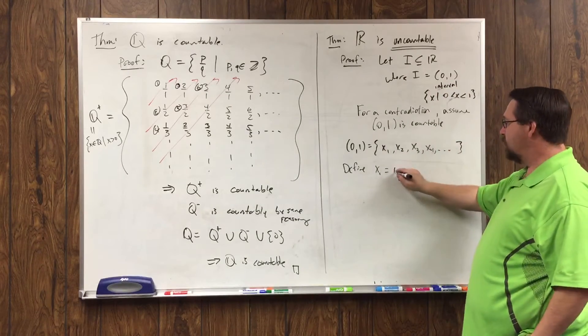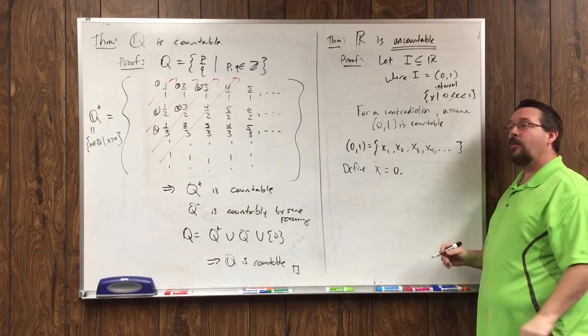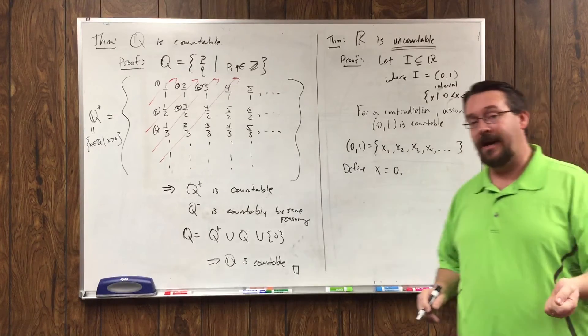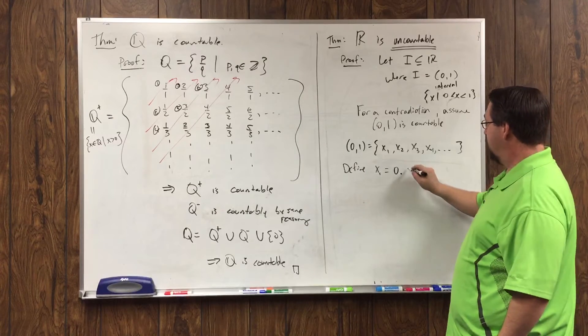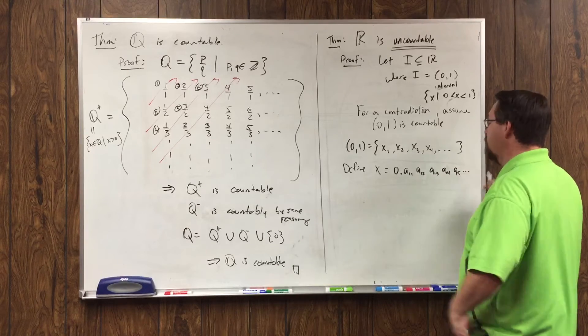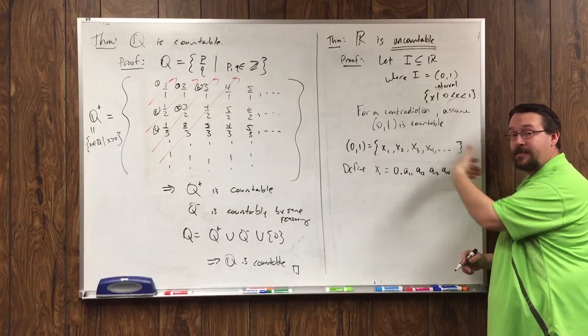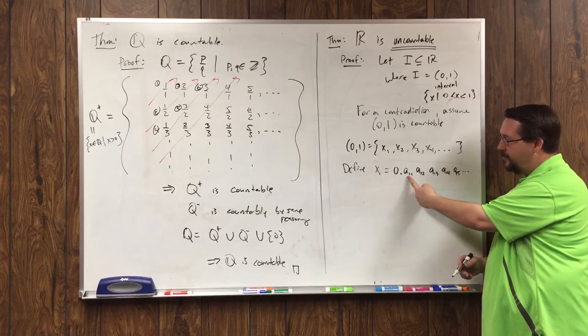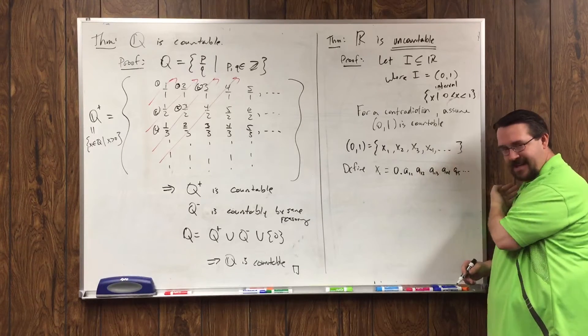And just for notation, let's define x sub 1 to be, now because it's between 0 and 1, this is why I've chosen that interval. It's 0 dot, let's do a decimal expansion. So this is the piece that I mentioned earlier where we haven't defined real numbers, but we are going to use a property that we are familiar with about real numbers, namely that they have a decimal expansion. So what I'm writing here is the decimal expansion of that number. Whatever x1 is, we're just assuming that it's something that I can write in this list because it's countable. So I'm going to let the first one be, whatever the tenths place of x1 is, that's a11, a12, a13, a14, a15, and so on. Tenths, hundredths, thousandths, and that's the decimal expansion.